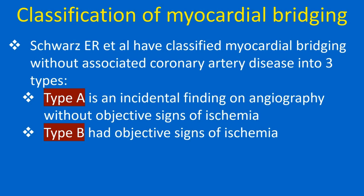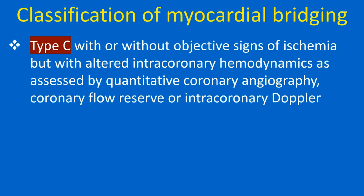Schwartz and colleagues have classified myocardial bridging without associated coronary artery disease into three types. Type A is an incidental finding on angiography without objective signs of ischemia. Type B had objective signs of ischemia. Type C, with or without objective signs of ischemia, had altered intracoronary hemodynamics as assessed by quantitative coronary angiography, coronary flow reserve, or intracoronary Doppler.